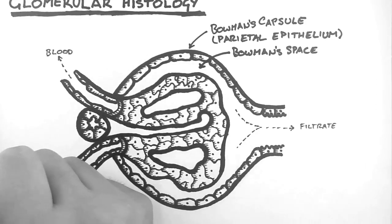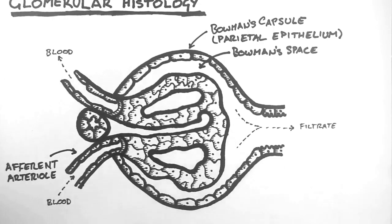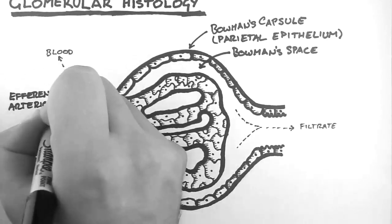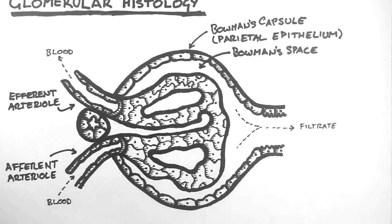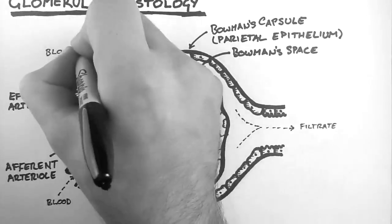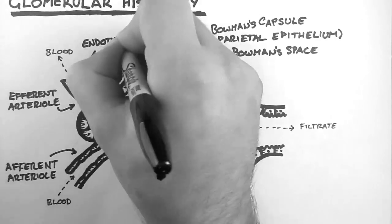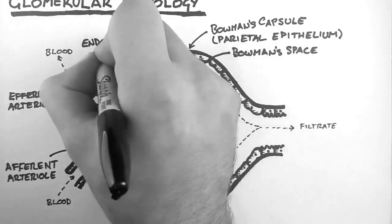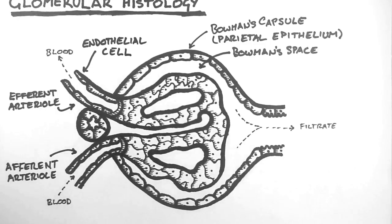As we discussed in the last tutorial, these are the afferent and efferent arterioles, and they can constrict and dilate in order to regulate the rate of filtration, known as the glomerular filtration rate, or GFR. And like all blood vessels, these arterioles are lined by endothelial cells, not to be confused with epithelial cells — they are a completely different type of cell and have a different embryological origin.